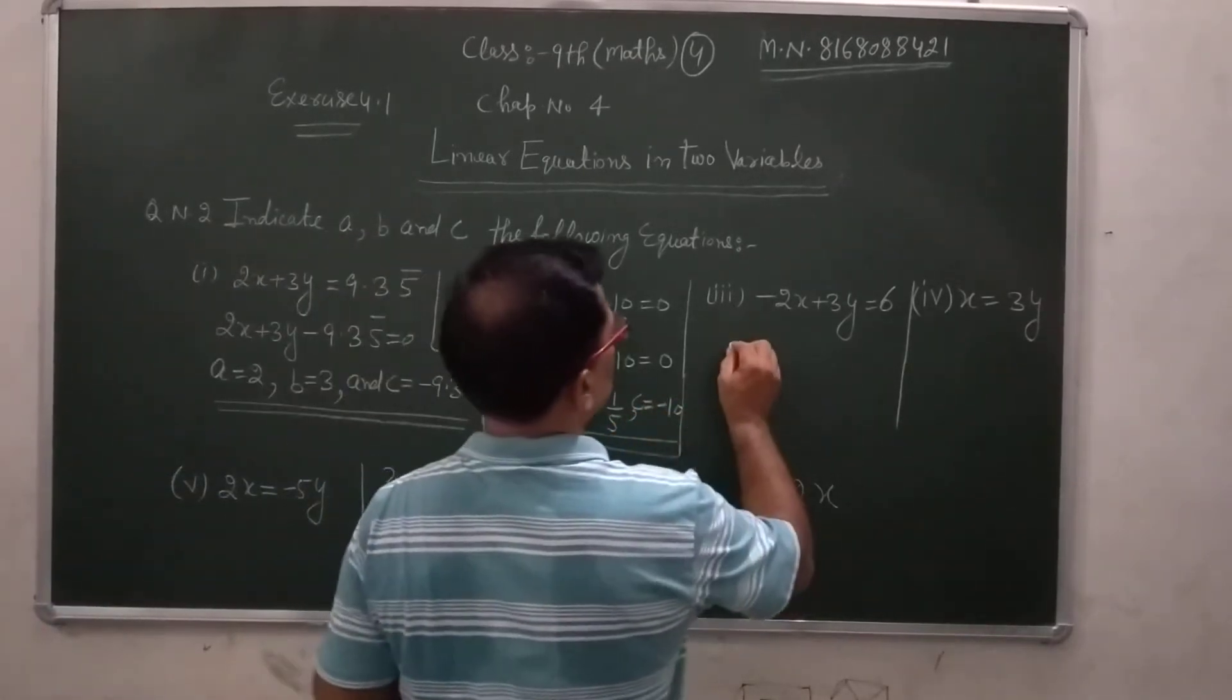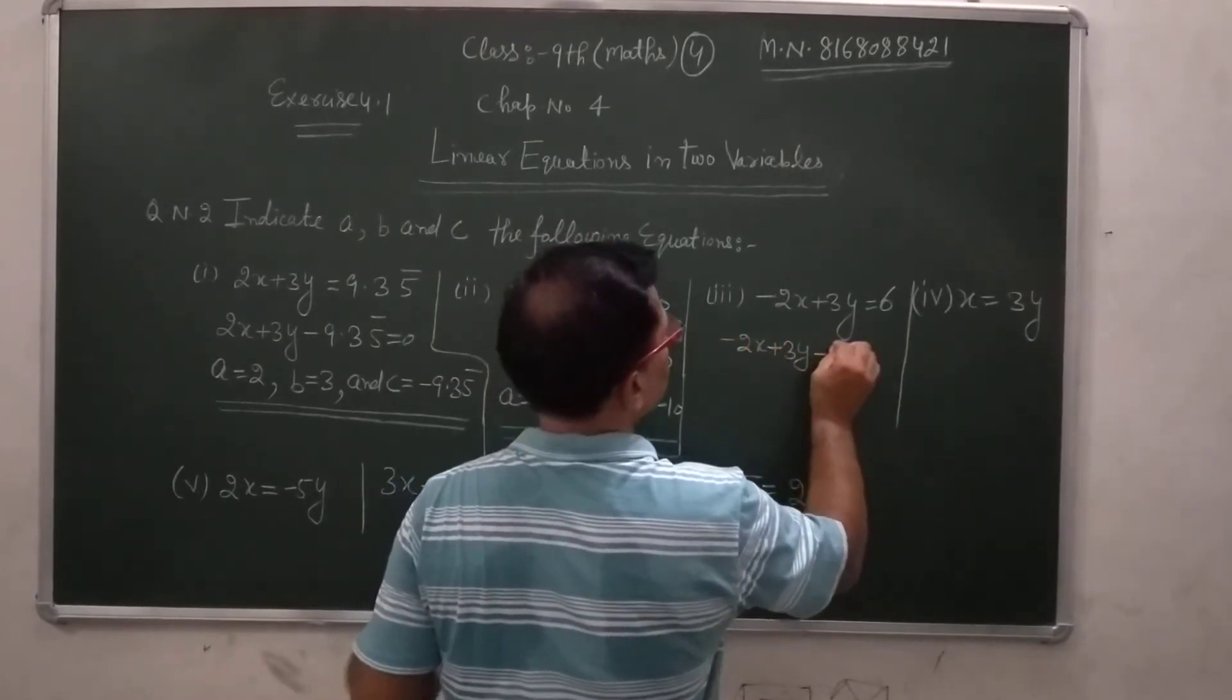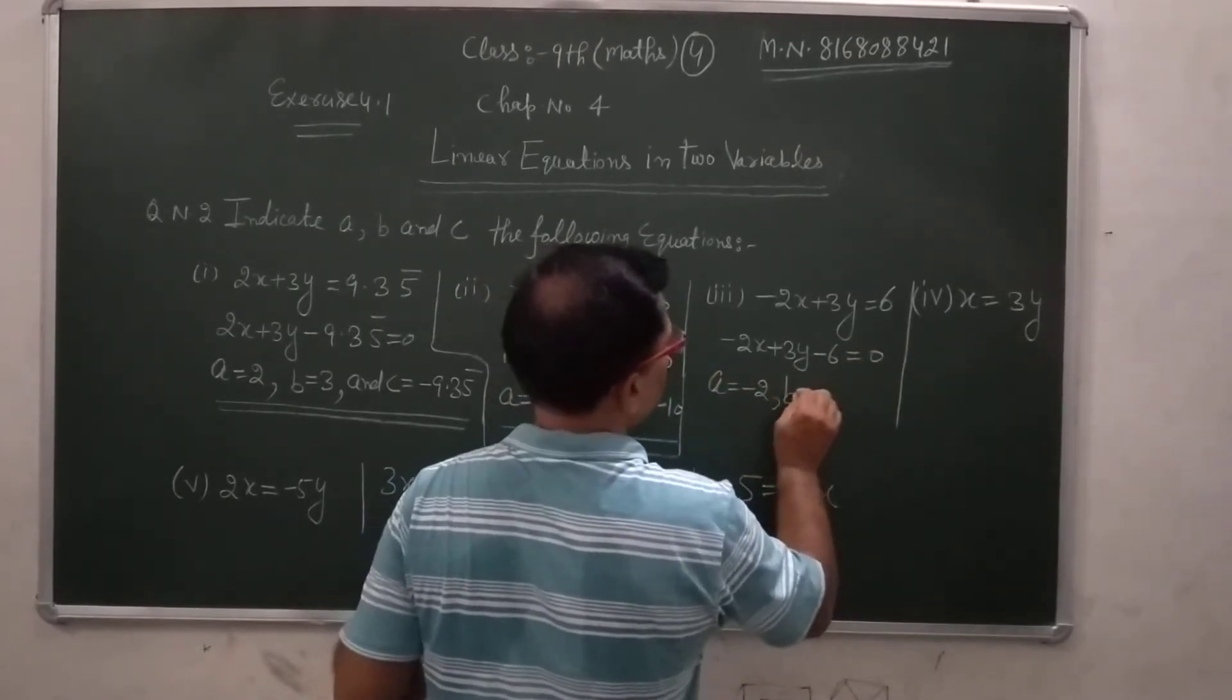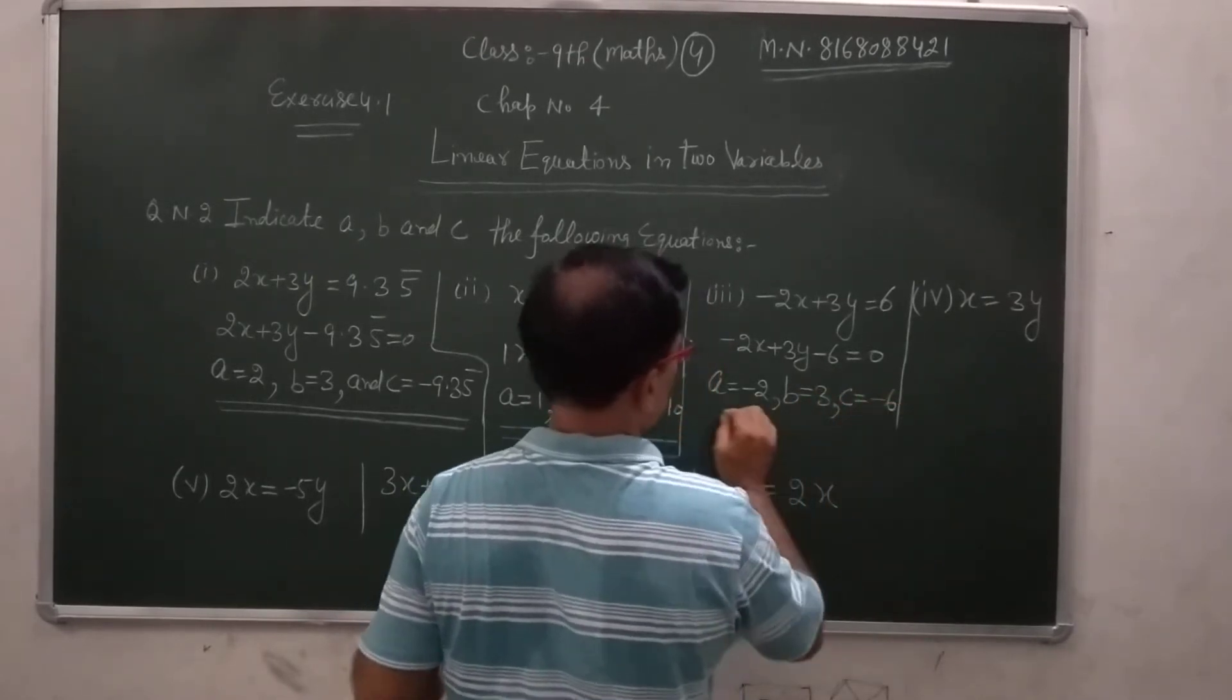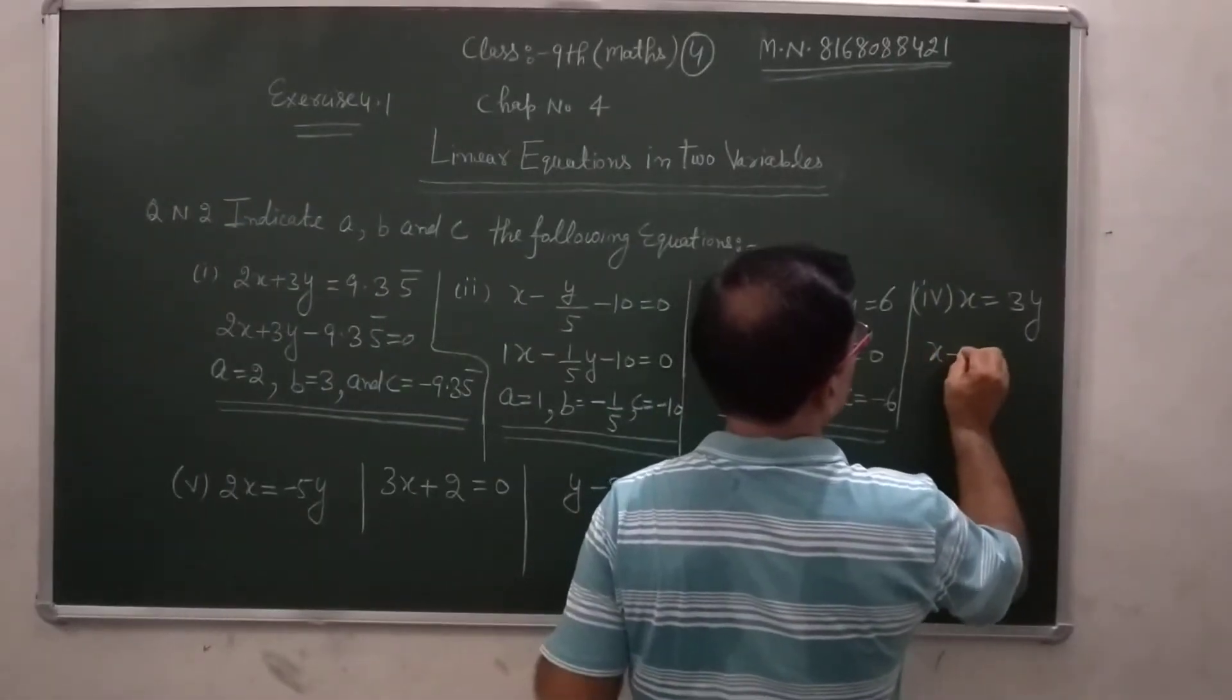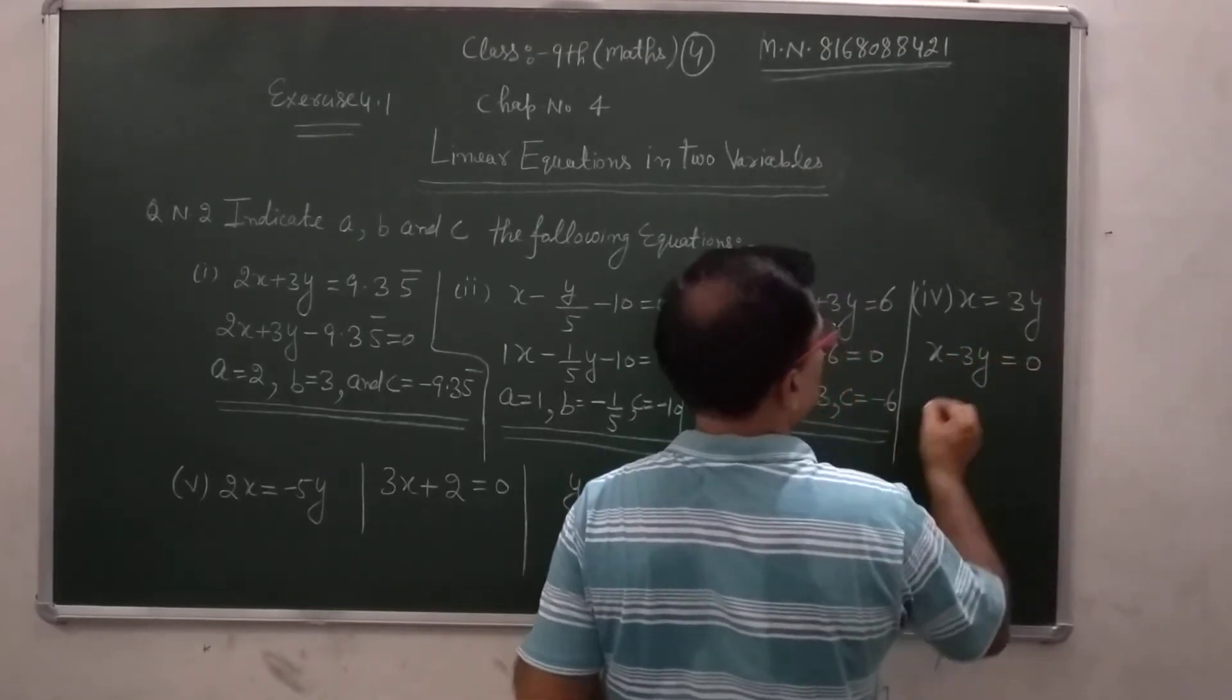In this, you can write minus 2x plus 3y minus 6 is equal to 0. A is equal to minus 2, B is equal to 3, C is equal to minus 6. A, B, C indicated. And you can write this x minus 3y is equal to 0.